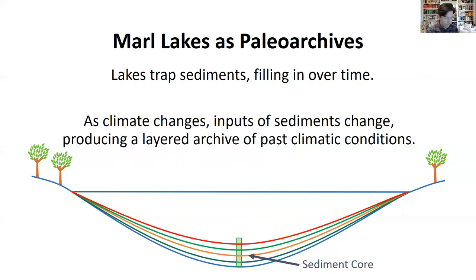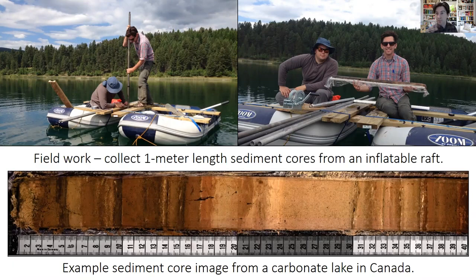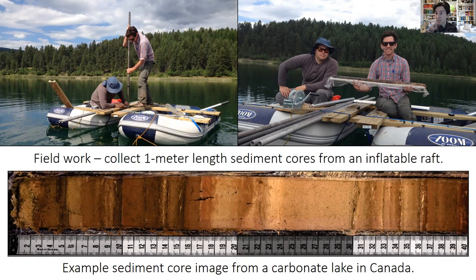Coring in winter is actually somewhat easier because there are fewer bugs, although obviously it can be freezing cold. Here are some examples of fieldwork in the Canadian Rockies, where we went out in summer using inflatable boats built into a raft to collect successive one-meter-length sediment core samples. We take those back to the lab, split them, and photograph them. The bottom image shows a representative sediment core from this lake in Canada, with really striking layers and differences in color reflecting variable concentrations of carbonate minerals and organic matter inputs.